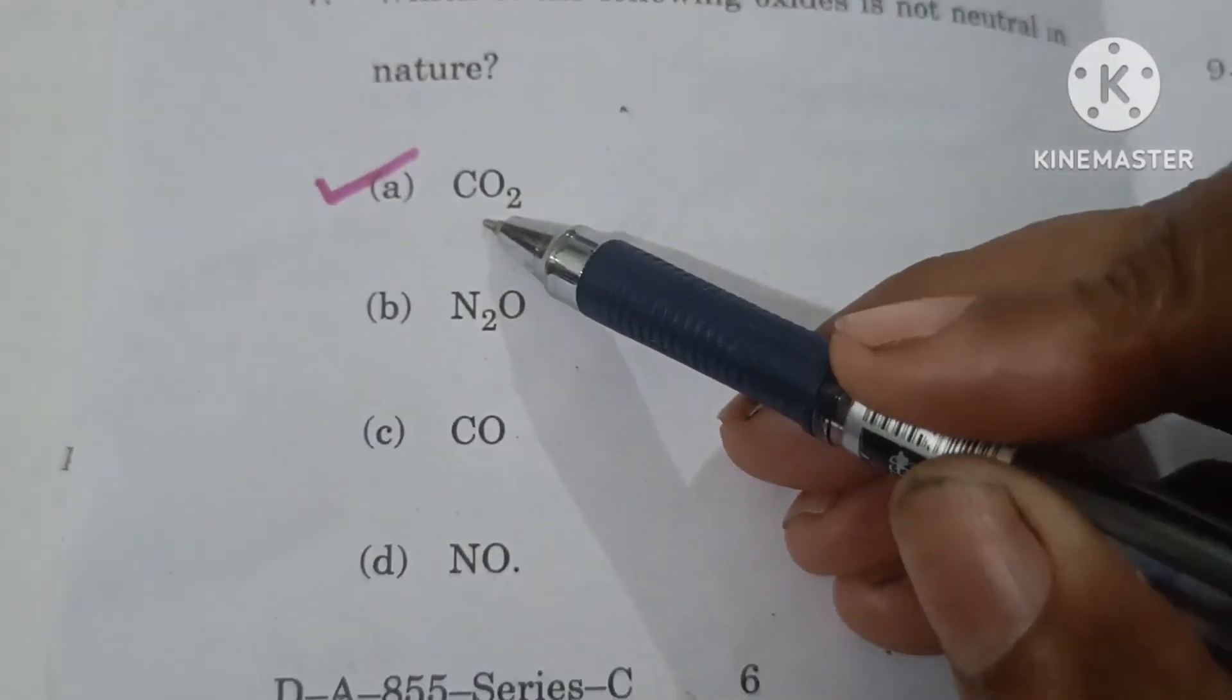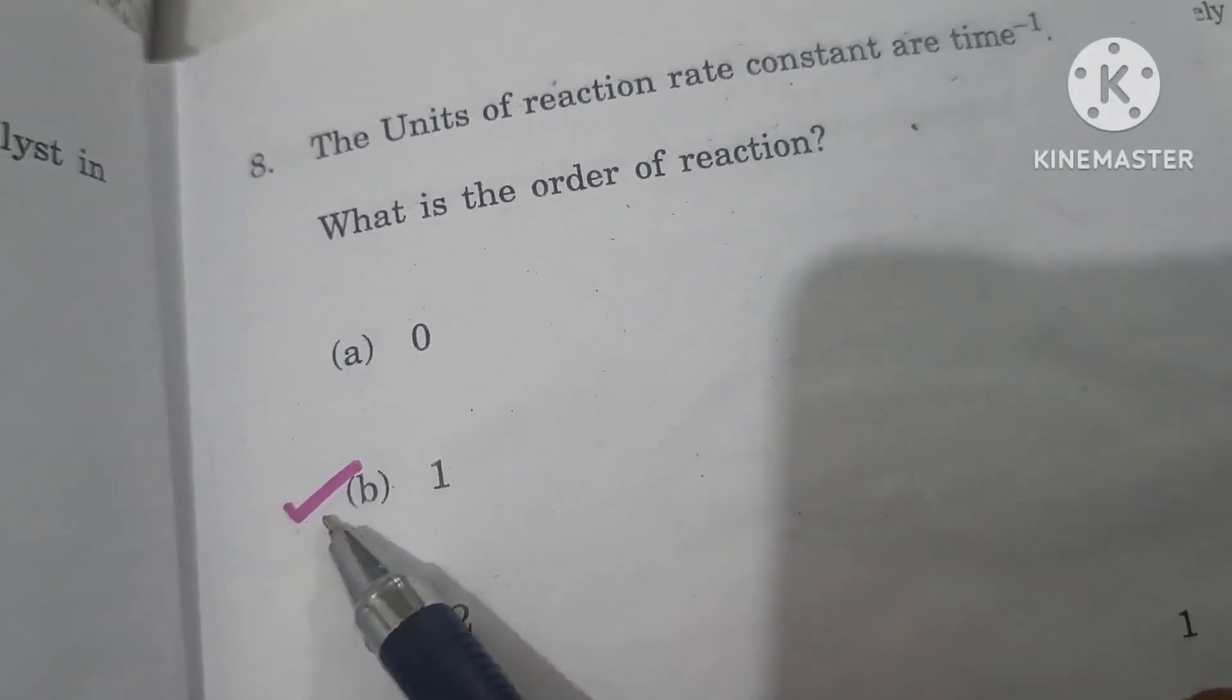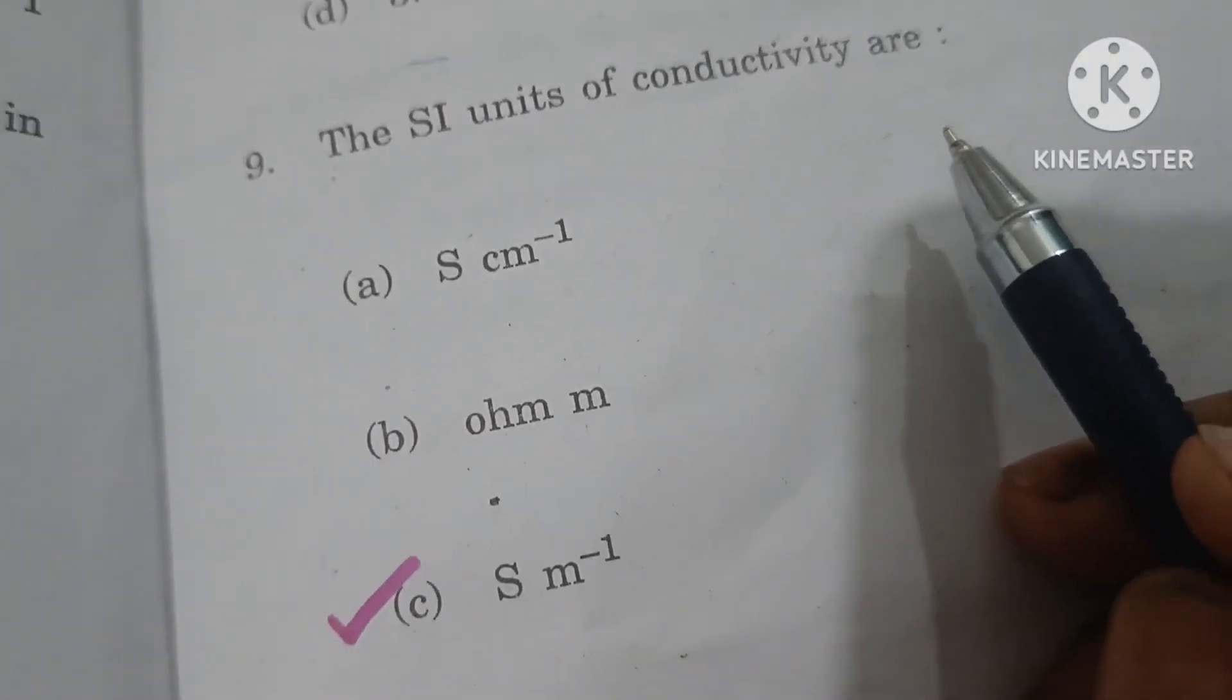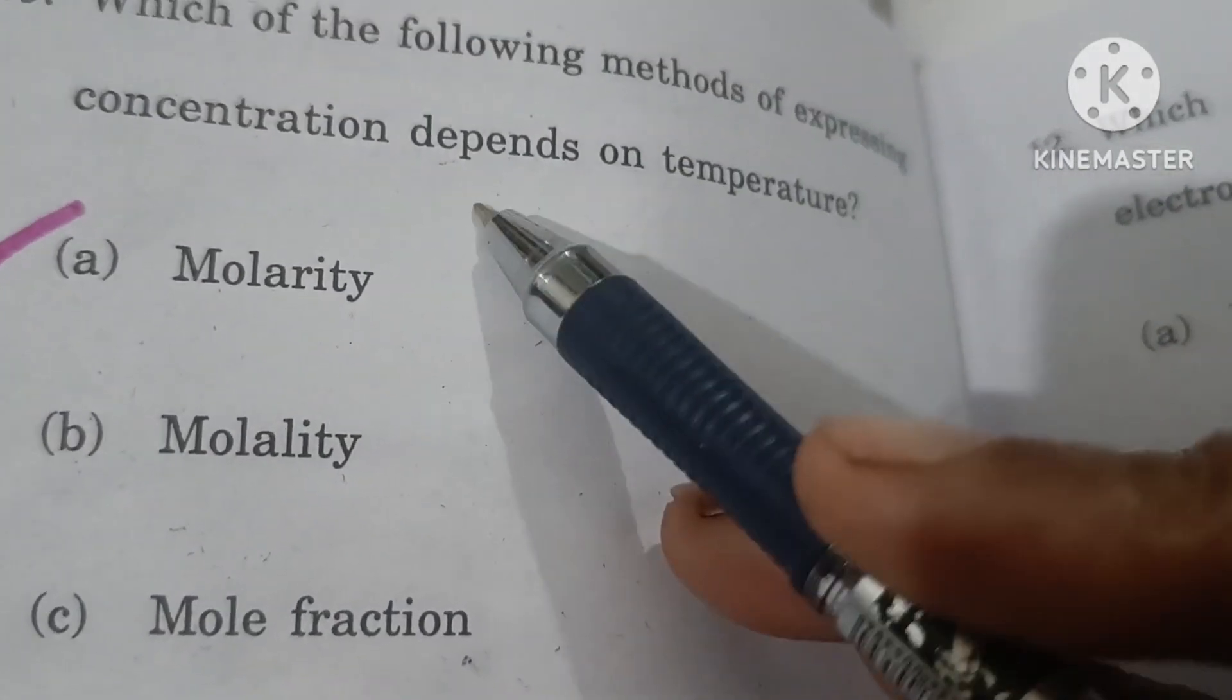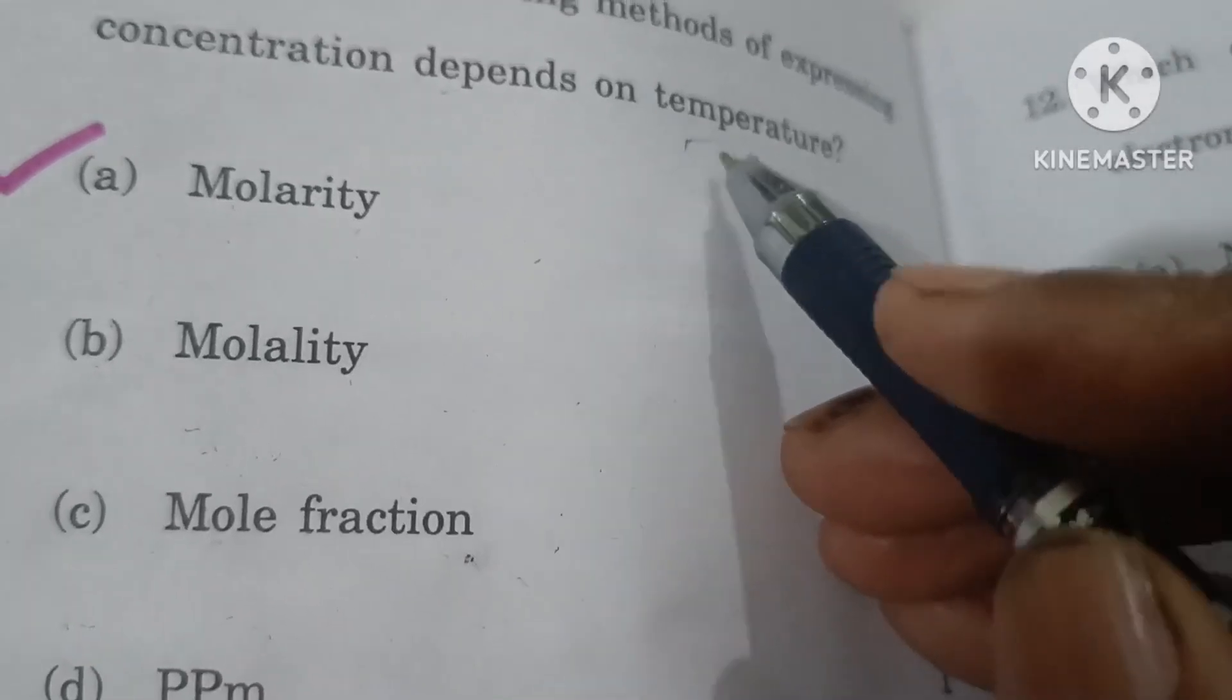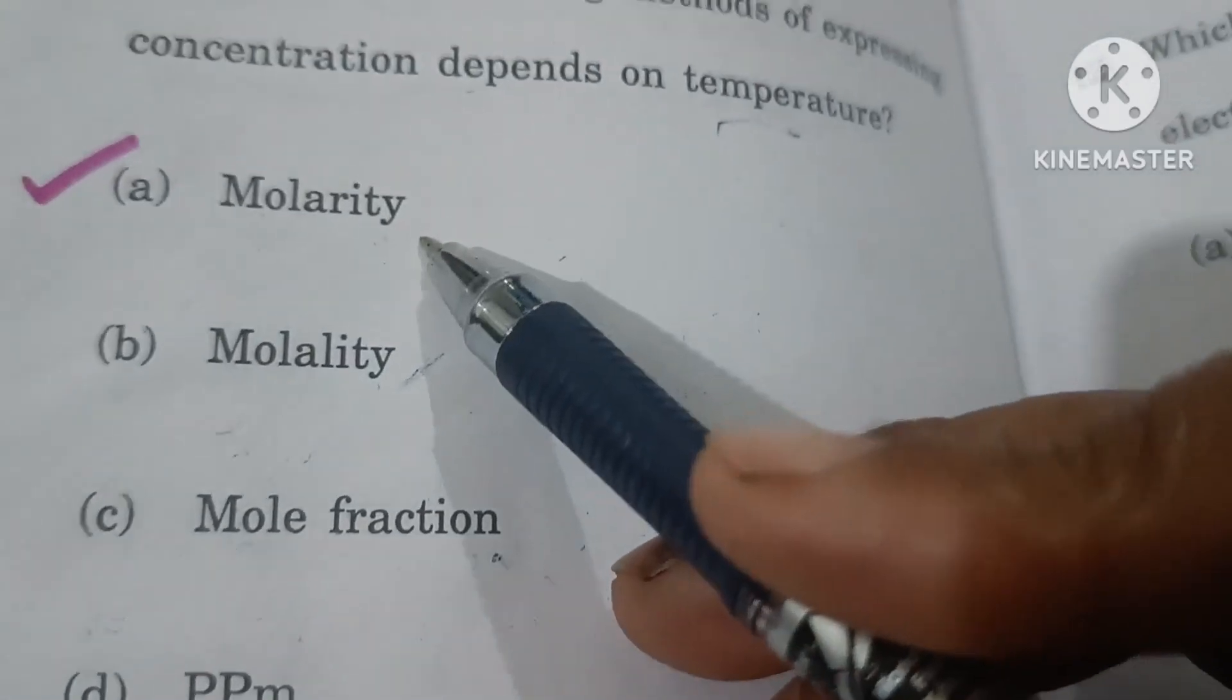The units of reaction rate constant are time inverse. What is the order of reaction? First order. SI unit of conductivity is siemens meter inverse, so option C is the correct answer. Which of the following methods of expressing concentration depends on temperature? Molality does not depend on temperature.